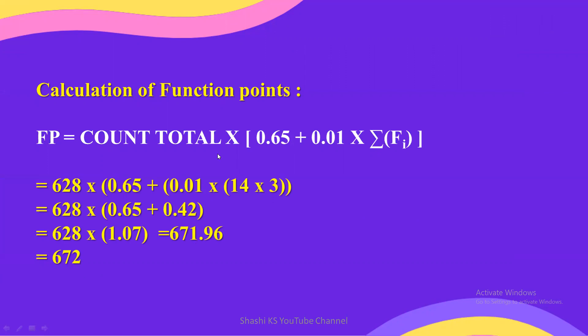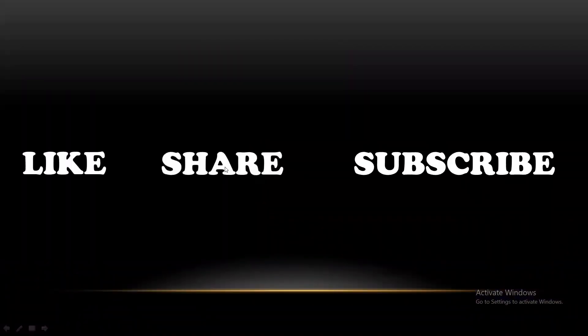We use five measurement parameters multiplied with their weighting factors — average values being 4, 5, 4, 10, and 7. We also have 14 complexity assessment values, each multiplied with its characteristic weight, summed up, and applied in the formula. Hope you understood the concept of function points. If you found it useful, give a thumbs up, share it with your friends, and subscribe to the channel. See you in the next video — take care, bye-bye.